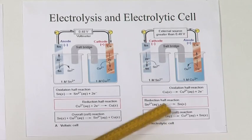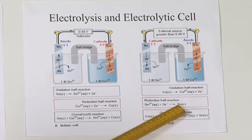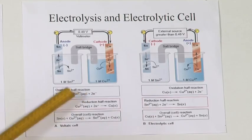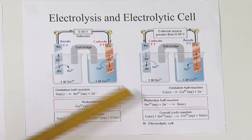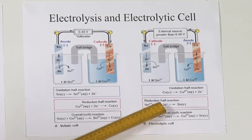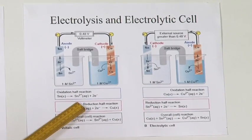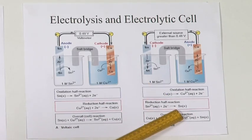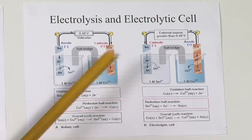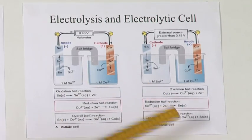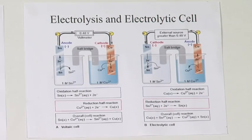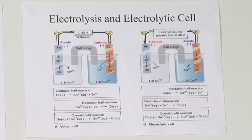Sn2+ is accepting electrons to form tin. So in both cases — whether it is an electrolytic cell or an electrochemical cell — the anode is where oxidation takes place and the cathode is where reduction takes place. The charge is different, and this is the major difference between the electrolytic cell and the electrochemical cell.